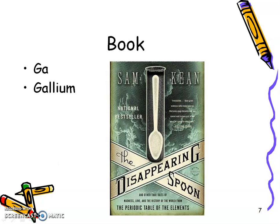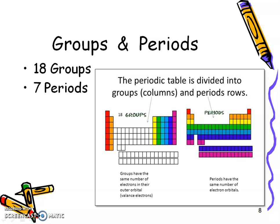He talked about the book, The Disappearing Spoon, because it's about gallium, a really unique element. He talked about the groups and periods again. Hopefully by now, you know, groups go up and down, periods go across.